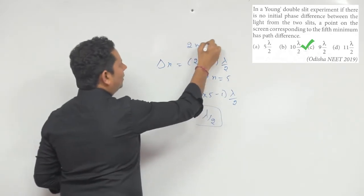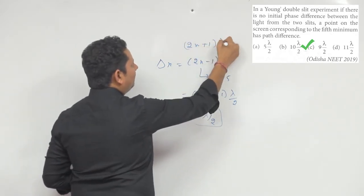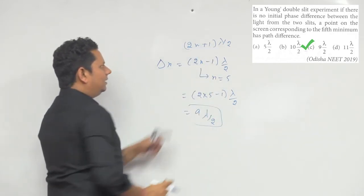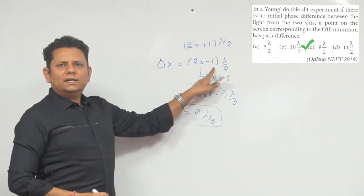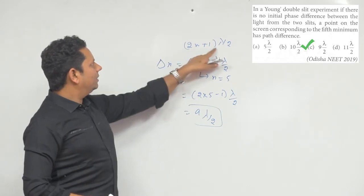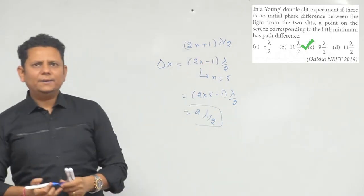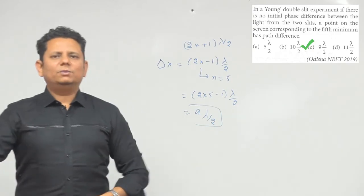You can write it as (2n+1)λ/2 or (2n-1)λ/2. Just remember: if you're writing 2n-1, write n as 5 for the fifth minima. If you're writing 2n+1, write n as 4. Both give the same answer. So option C would be the right answer.